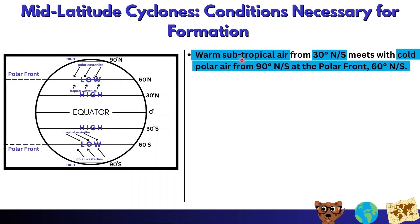Looking at the diagram, warm air found at 30 degrees north will meet cold polar air coming from 90 degrees north, and they will meet at the polar front located at 60 degrees north. This occurs in both hemispheres — either in the northern hemisphere or the southern hemisphere.